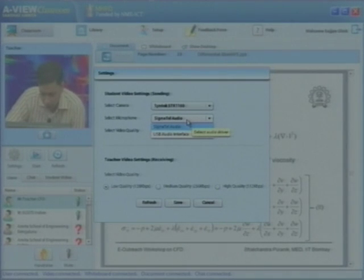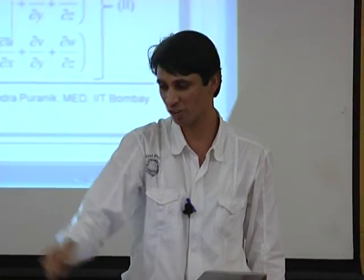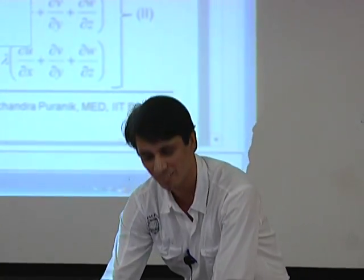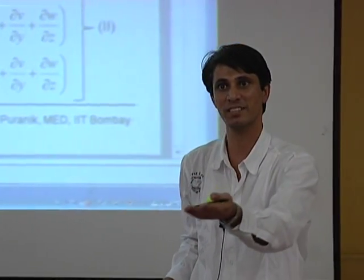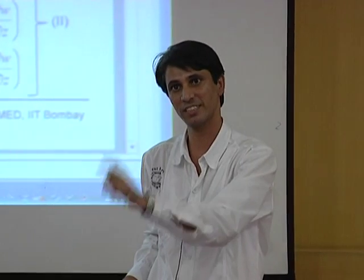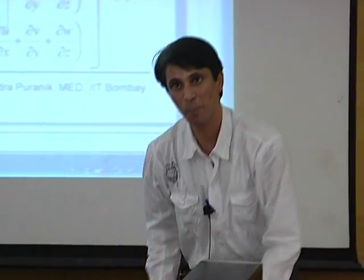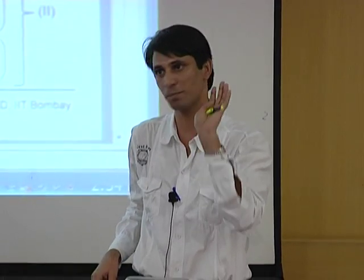Some people forget that the USB device is set as default. You should select the Sigma Tel or Realtek audio device, because you will use the PC's own audio device — you are not using the EasyCap's audio device. Whatever device you have — Sigma Tel, Realtek, or Sound Max — select that device only. For video quality, if the upload bandwidth is too high, you can use 512 kbps; otherwise use only 128 kbps.